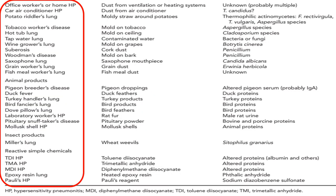There is also a long list of other hypersensitivity pneumonitis diseases, for example: office workers, car air conditioner lung, potato riddler's lung, tobacco workers' lung, wine and grain worker's lung, fish meal worker's lung. Under animal products: pigeon breeder's disease, turkey handler's lung, bird fancier's lung, dove pillow lung, pituitary snuff taker's disease, and insect products, and so on.